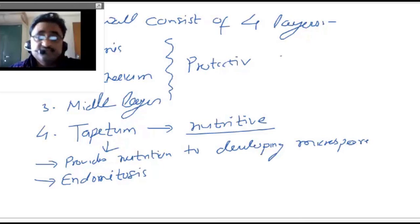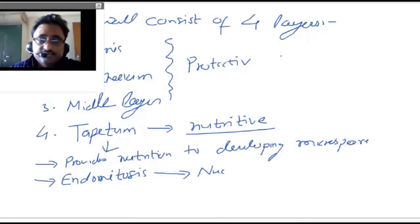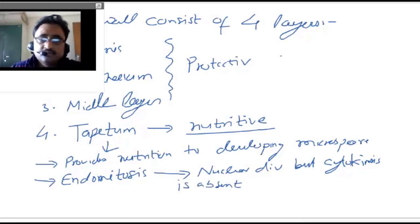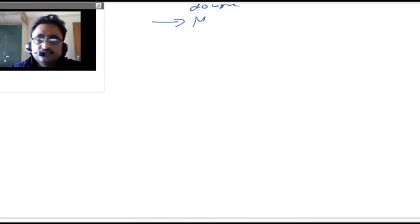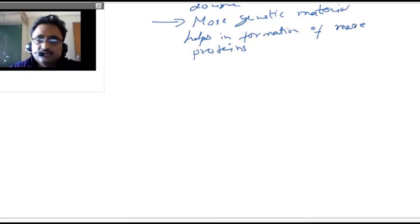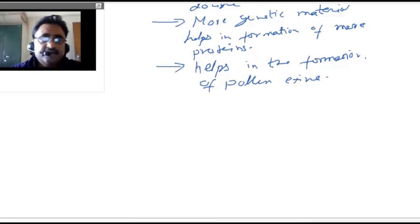What is specific about endomitosis? It is a cell division known for nuclear division but no cytoplasmic division — cytokinesis is absent. As a result, since nuclear division occurs, the genetic material doubles. This increased genetic material helps in forming more and more proteins. So the tapetum provides nutrition to developing microspores, undergoes endomitotic cell division where nuclear division occurs but there is no cytokinesis, causing chromosome number to increase, which leads to more protein production.